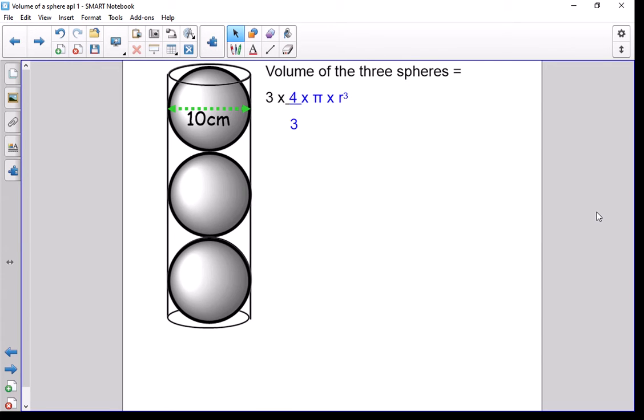A couple of things to consider here: the volume of three spheres will be three lots of the formula, so 4/3 times π r³.